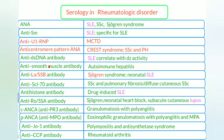Anti-Smith antibody (anti-Sm) is different from smooth muscle antibody — please don't overlap these. Smooth muscle antibody is for autoimmune hepatitis, while anti-Smith (Sm stands for Smith) is for SLE and is specific for SLE.